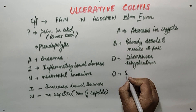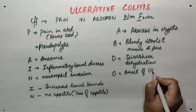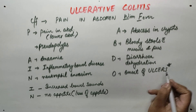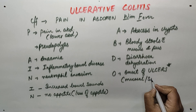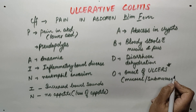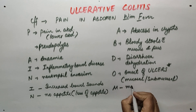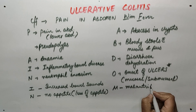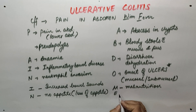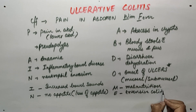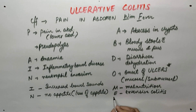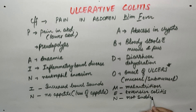O is onset of ulcers, which can be mucosal or submucosal. M is malnutrition. E is extensive colitis extending to the hepatic flexure, and the onset is not sudden but gradual.